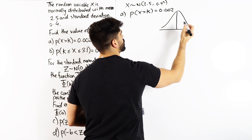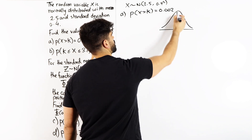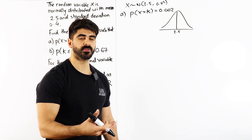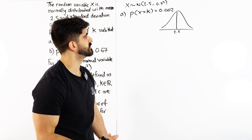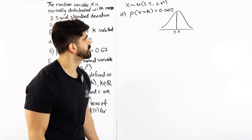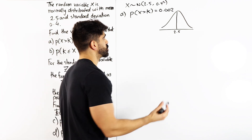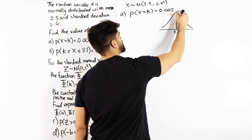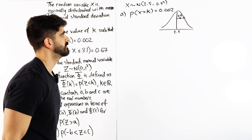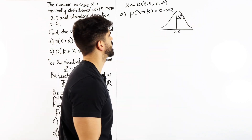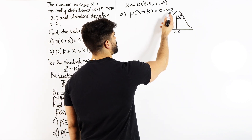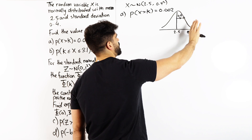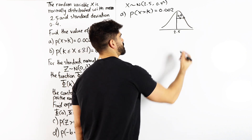The cool thing about the normal distribution is that the peak is at the mean. Most probabilities will centre around the mean — that's why it's an average. The inflection point of a normal distribution is always the standard deviation away from the mean, which in this case is 0.4. So always indicate both on your diagram. The probability that x is greater than k is some tiny 0.02, meaning it must be far over to the right.